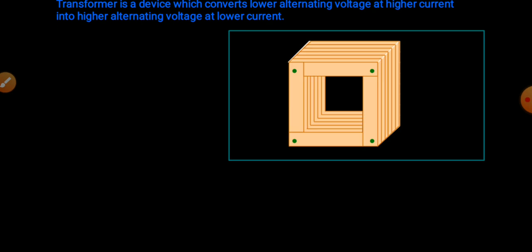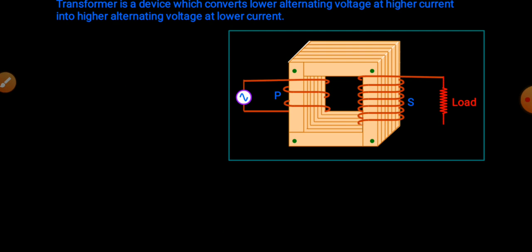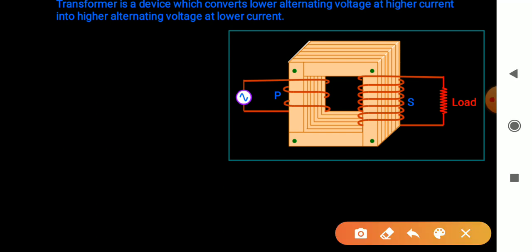Let's talk about the construction of a transformer. A transformer consists of two coils, called coil P and coil S — the primary coil and secondary coil respectively. These two coils are insulated from each other and wound on a common soft iron laminated core. One of the two coils has a smaller number of turns of thick insulated copper wire, while the other has a larger number of turns of thin insulated copper wire. In a step-up transformer, the coil of thick copper wire with a smaller number of turns is the primary coil, and the coil of thin wire with a larger number of turns is the secondary coil.